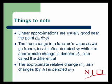Some things to note about linear approximations are that they are usually good near the point where you find that tangent line. If the tangent line goes through the curve at a given point, then clearly the tangent line is exactly the value of the curve at that point, and that tangent line should be good close to that point. The true change in a function's value as we go from x₀ to x₁ is often denoted Δy, while the approximate change will be denoted dy, and that's called a differential. The approximate relative change in y, as x changes by dx, is denoted by dy/y. That's how much does y change divided by the value of y when you change x by a little bit.